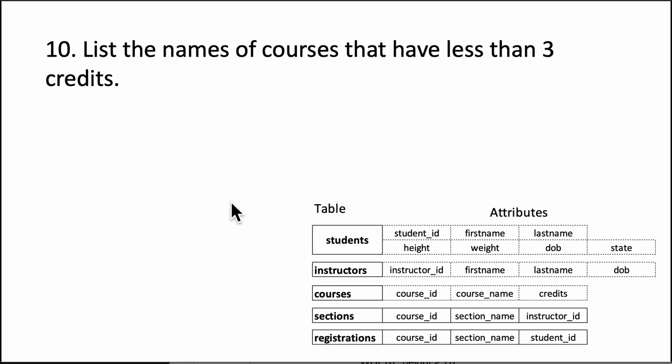So we can say SELECT course_name, which is the actual name of the column in the database. This time our table is courses, not students, so we say FROM courses.